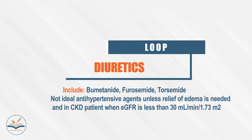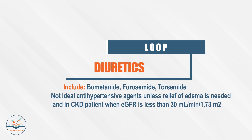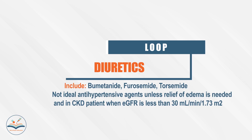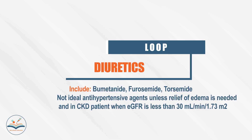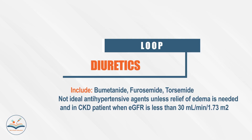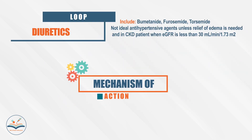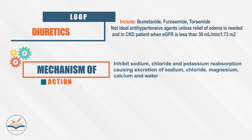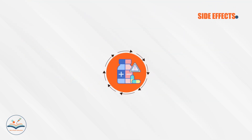Loop diuretics, like furosemide, are not ideal antihypertensive agents unless relief of edema is needed, or in chronic kidney disease patients when estimated glomerular filtration rate is less than 30. They inhibit sodium, chloride, and potassium reabsorption, causing excretion of sodium, chloride, magnesium, calcium, and water.